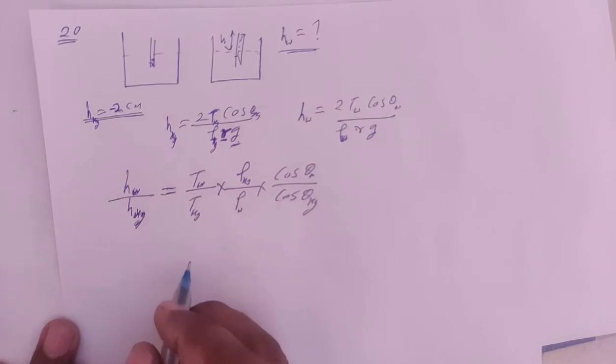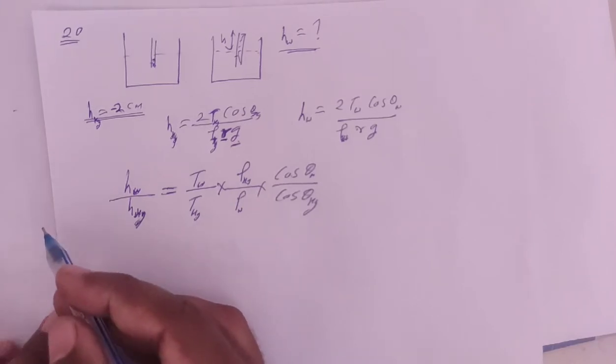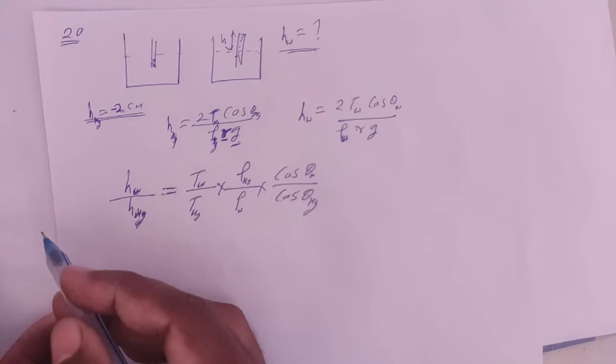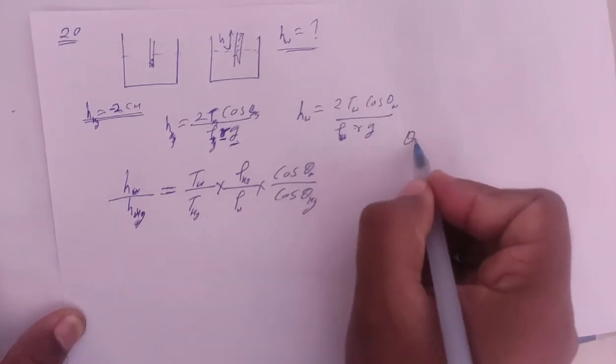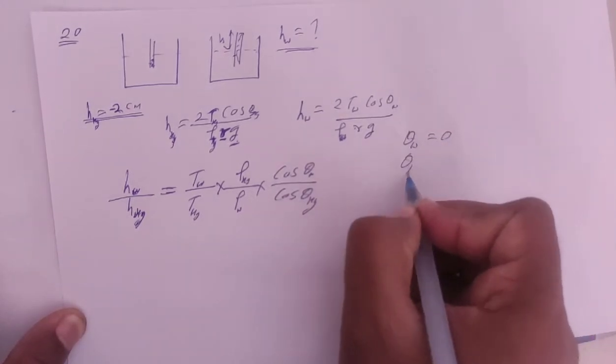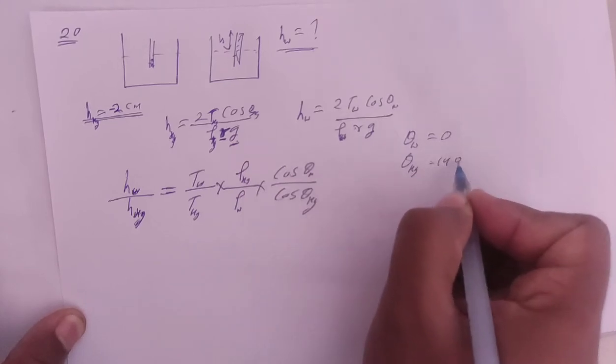These terms are given in the question. Check the chapter, page 285 has tension values and page 288 has angles. For water the angle is zero, and for mercury the angle is 140 degrees.